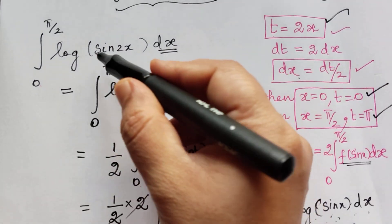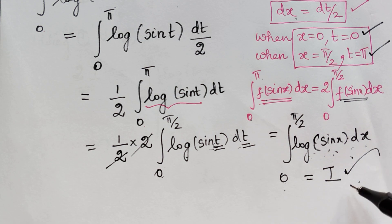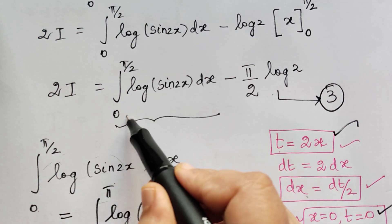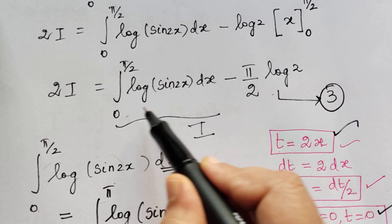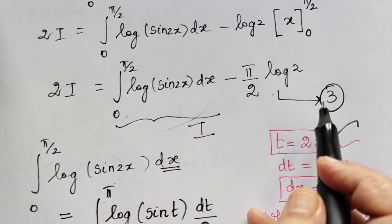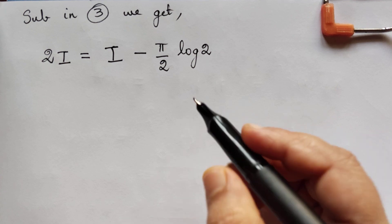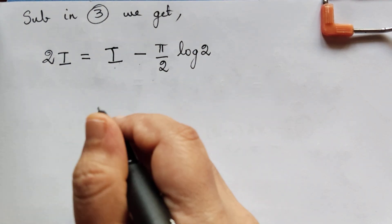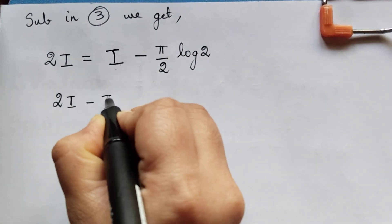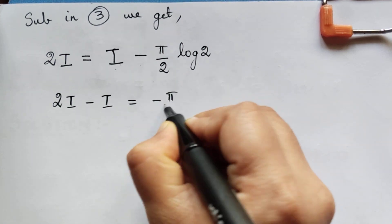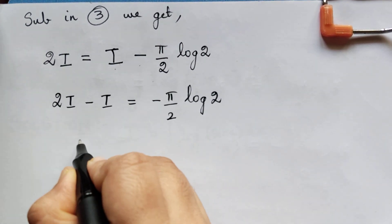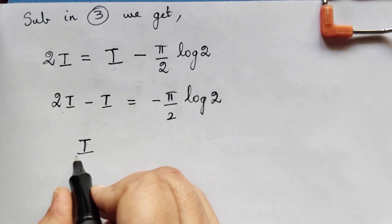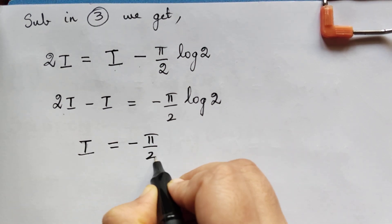So ∫₀^(π/2) log(sin 2x) dx = I. Substituting this into equation 3: 2I = I − (π/2) log 2. Taking I to the left: 2I − I = −(π/2) log 2, therefore I = −(π/2) log 2. This is the solution.